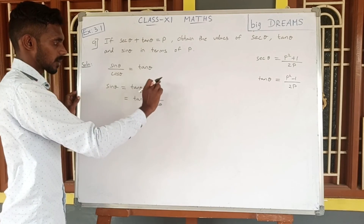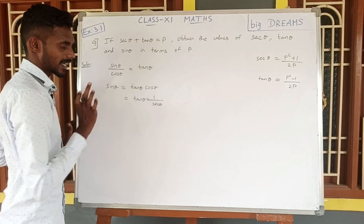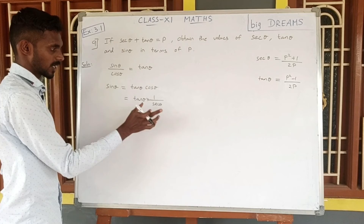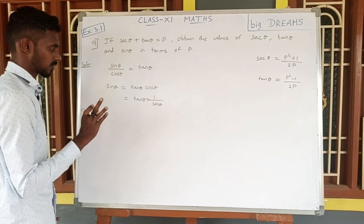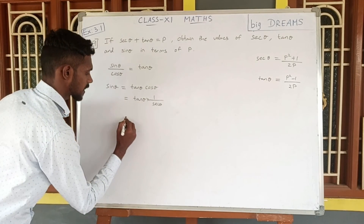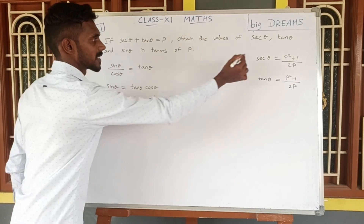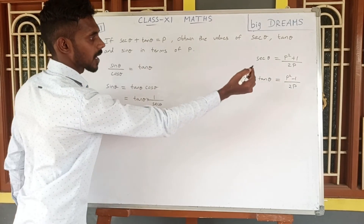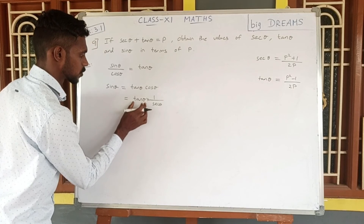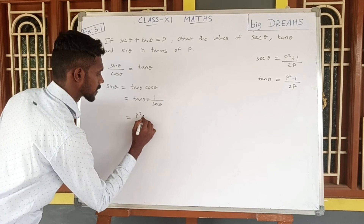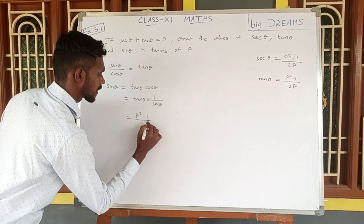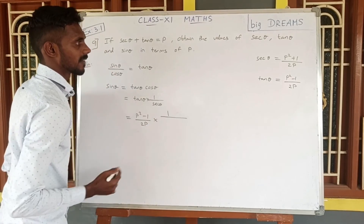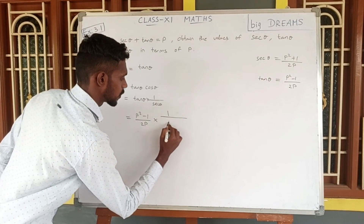Replacing cos theta with 1 by secant theta and applying our known values: secant theta equals P squared plus 1 by 2P, and tan theta equals P squared minus 1 by 2P. So sin theta equals tan theta divided by secant theta — that is, P squared minus 1 by 2P, divided by P squared plus 1 by 2P.